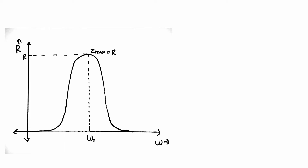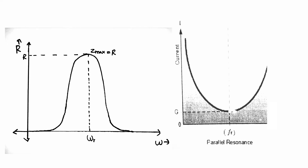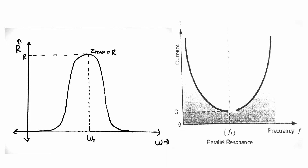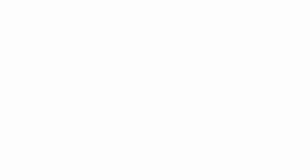Have a look at the graph. The first graph shows the plot of impedance versus omega. At resonant frequency ω_r, we get the maximum value of impedance, which is purely resistive. The second graph shows current versus frequency — at resonant frequency, the current value is minimum, and then it rises again on either side.